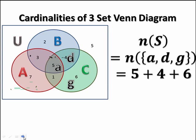So the number of elements in the region little a is 5. The number of elements in the region little d is 4. And the number of elements in the region little g was 6. We have to add those together. We see that we actually have 15 elements in that region. So that answers the question that we were asked.